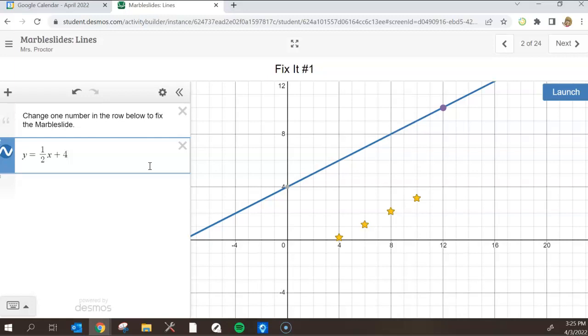What if instead of adding anything at all, what if instead I subtract a number? Subtract two? Subtract four? What's happening to that line as we're changing this last number here?